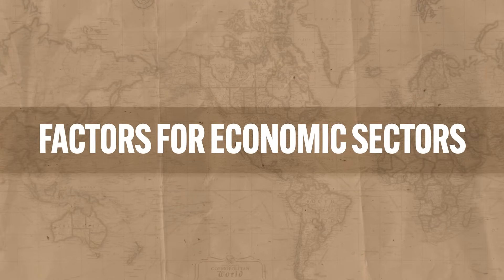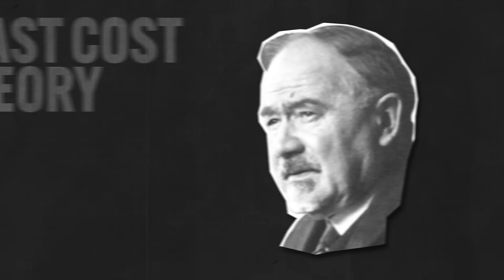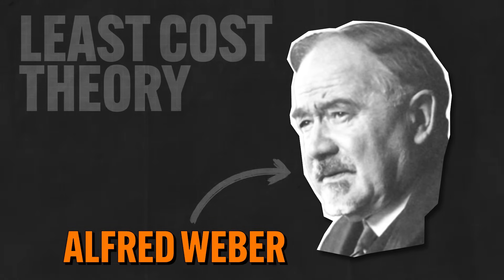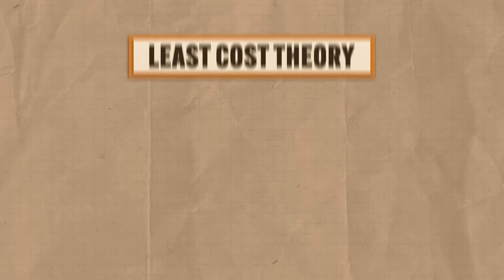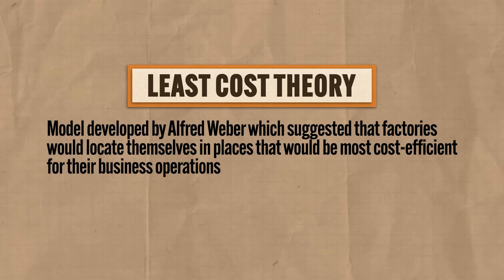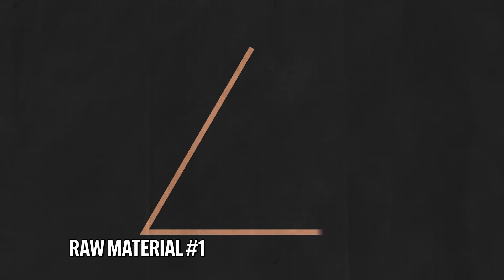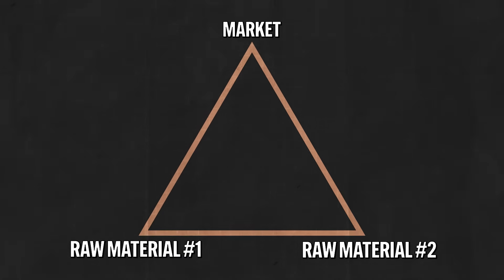There's also a model that explains economic activity on a smaller scale, within a country or region. The main model you need to know is the least cost theory, developed in the early 20th century by Alfred Weber, which tries to predict where factories will choose to locate — similar to von Thünen's model but applied to industrial instead of agricultural activities. Weber suggested factories would locate in places most cost-efficient for their operations, and he depicted his model as a triangle: two points represent access to raw materials and the other represents the market. The two determining factors for factory location are distance and weight.